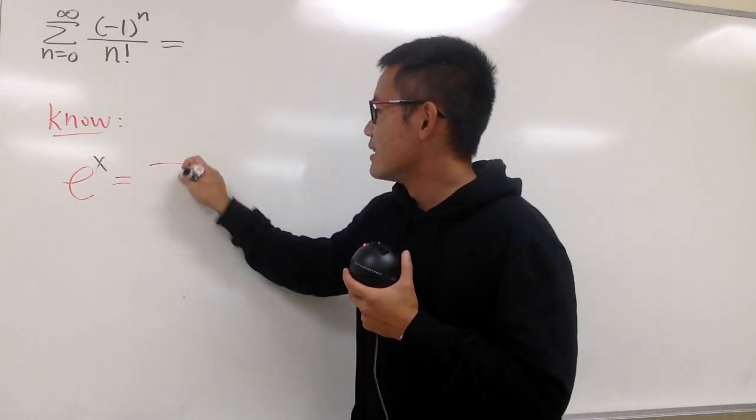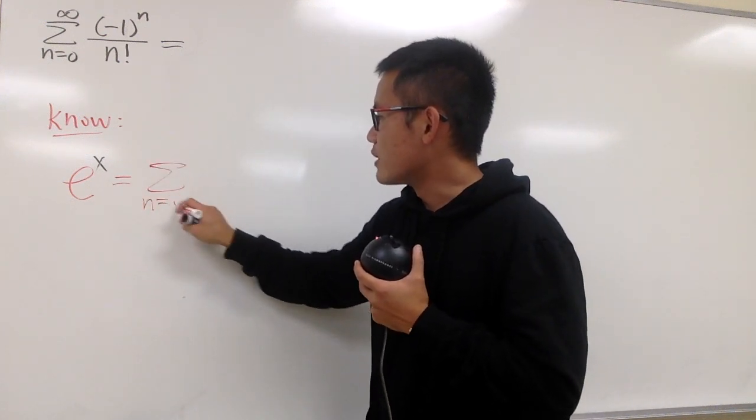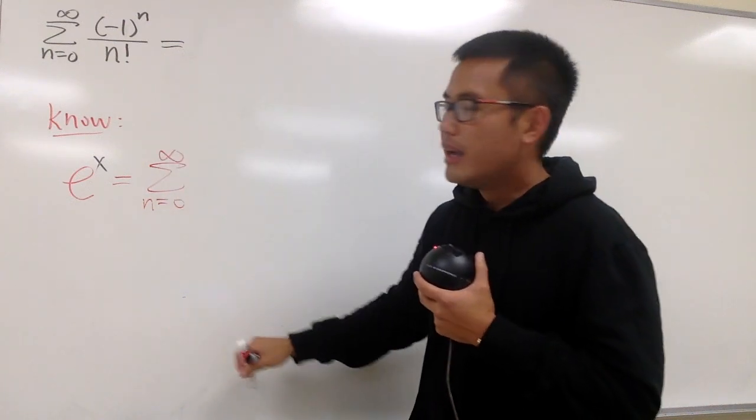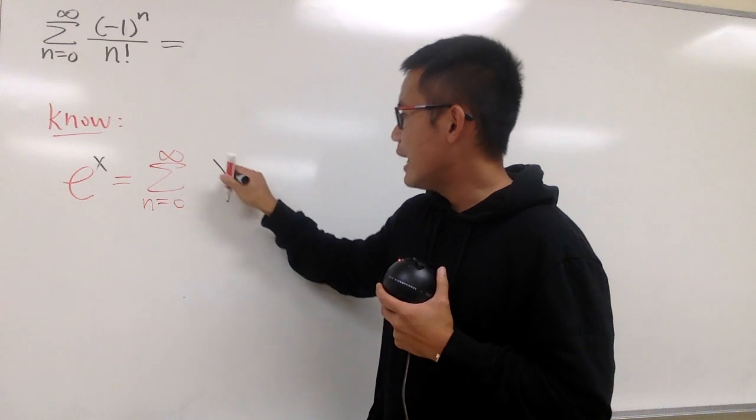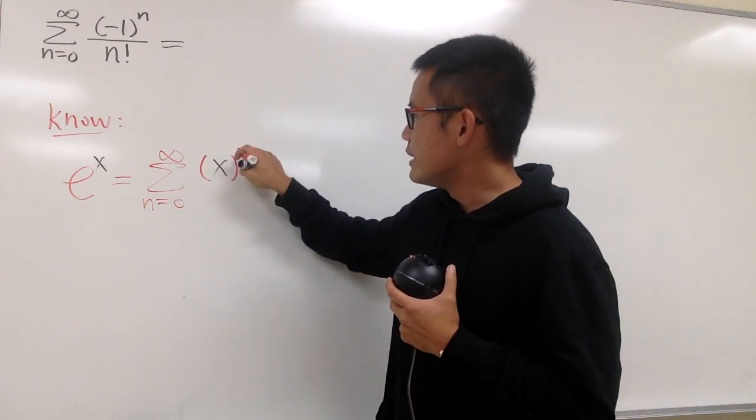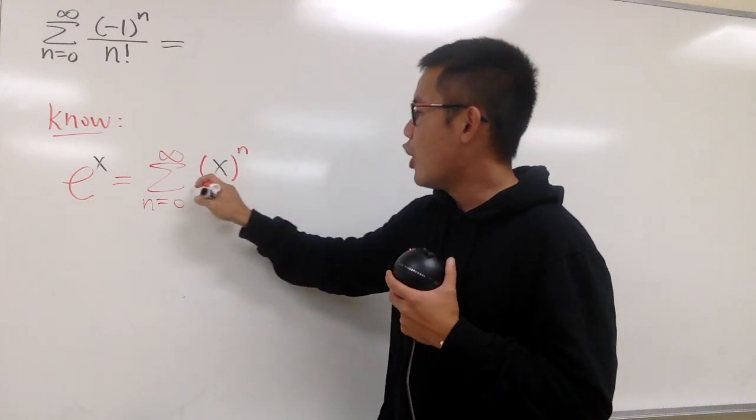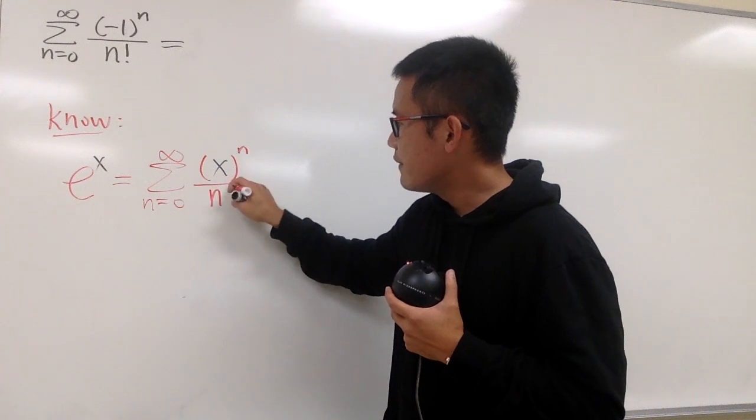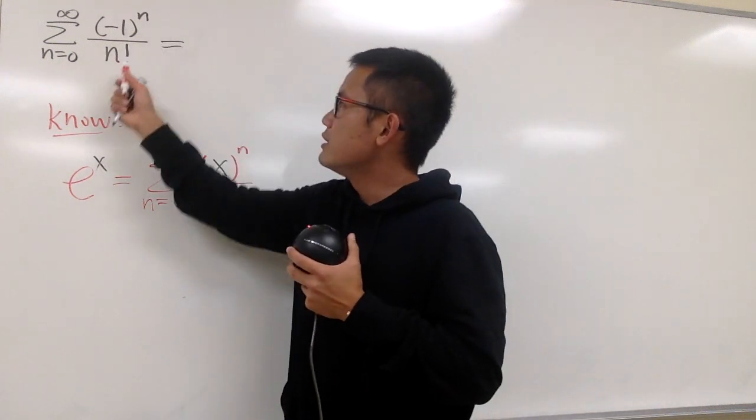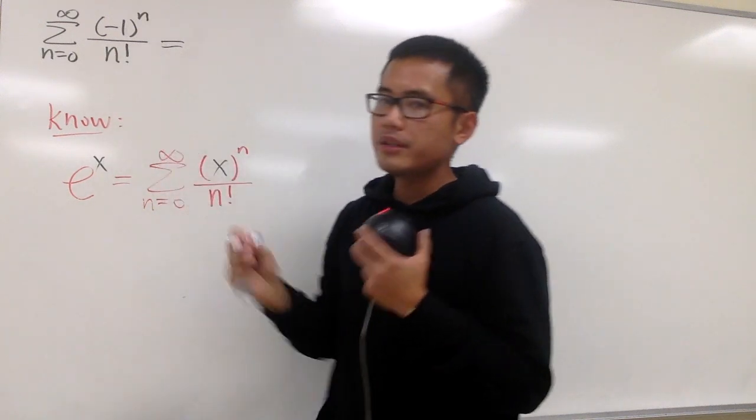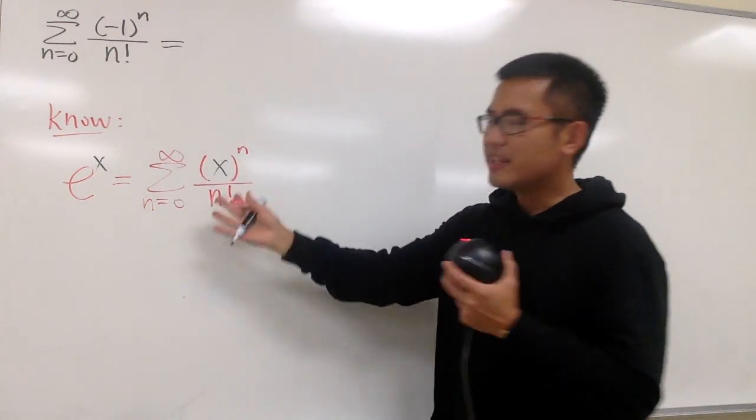e to the x is the same as the series as n goes from 0 to infinity, and this right here, I just used x for the input, and right here we will have x raised to the nth power, over just the n factorial. Whenever you have a series and you just have the n factorial in the denominator, please think about e to the x.